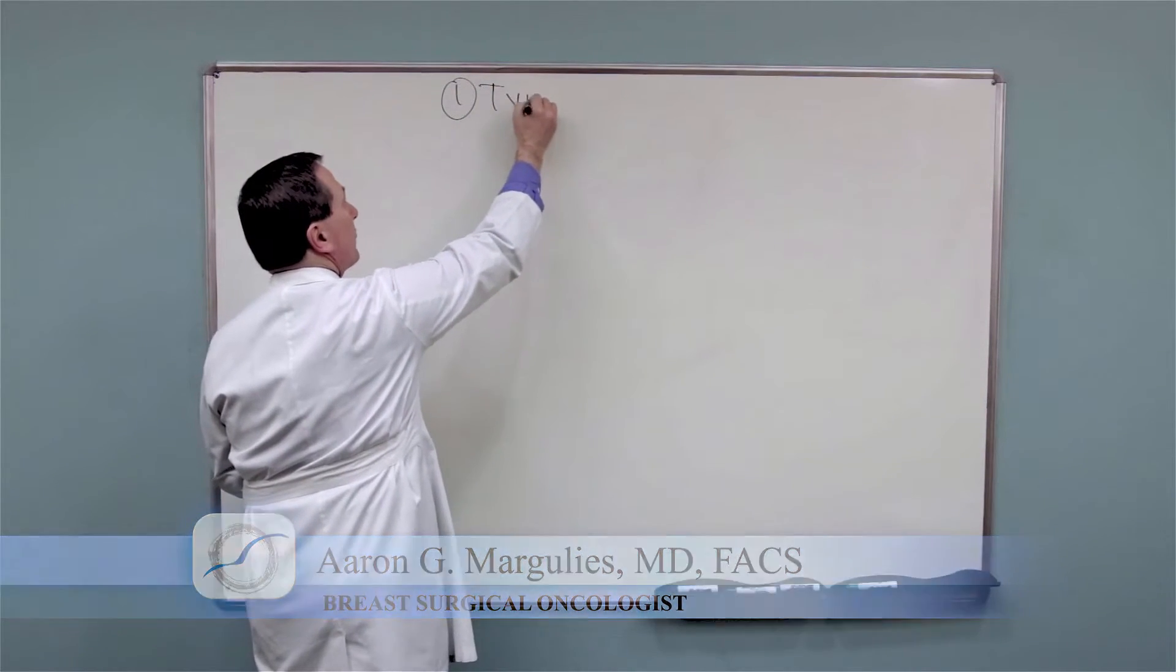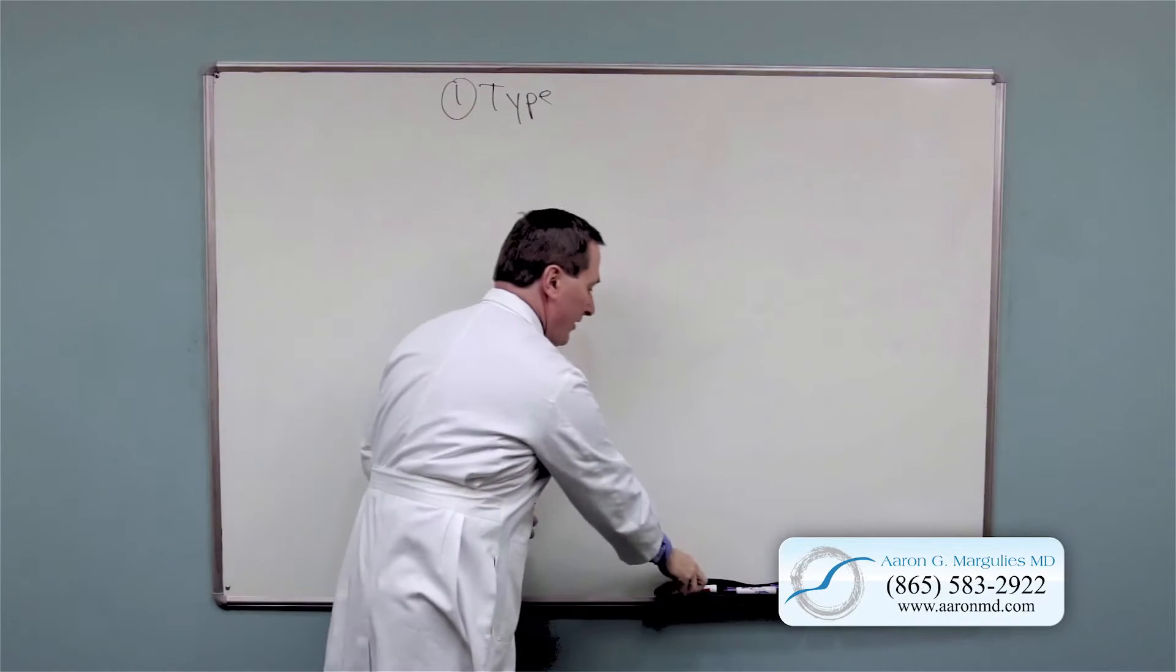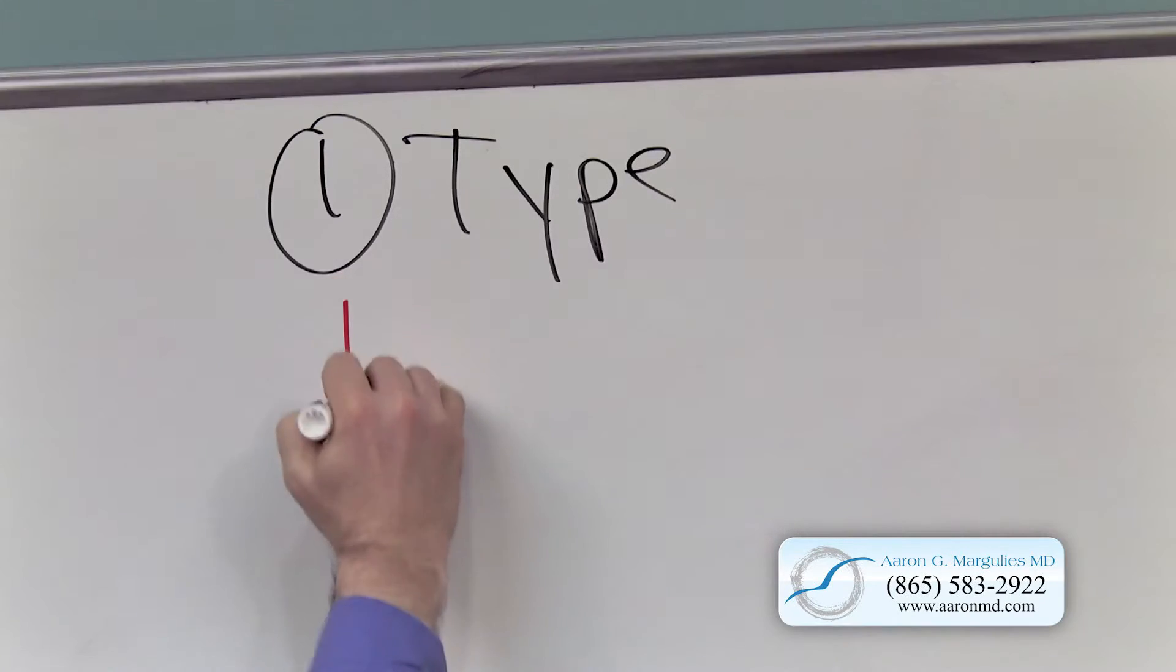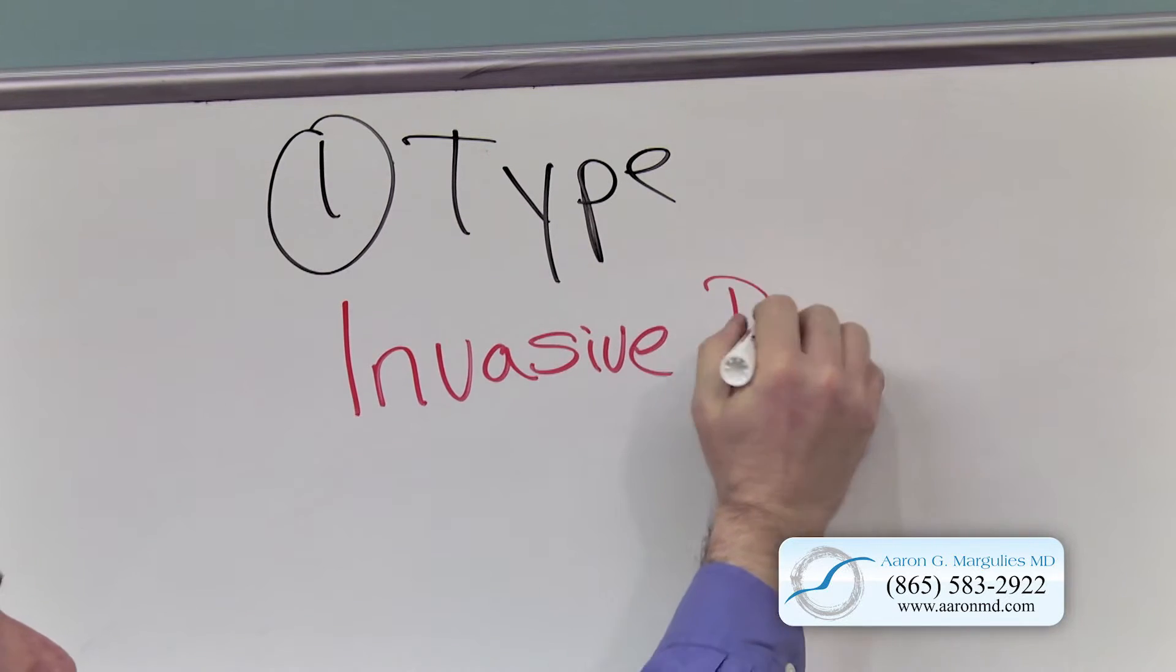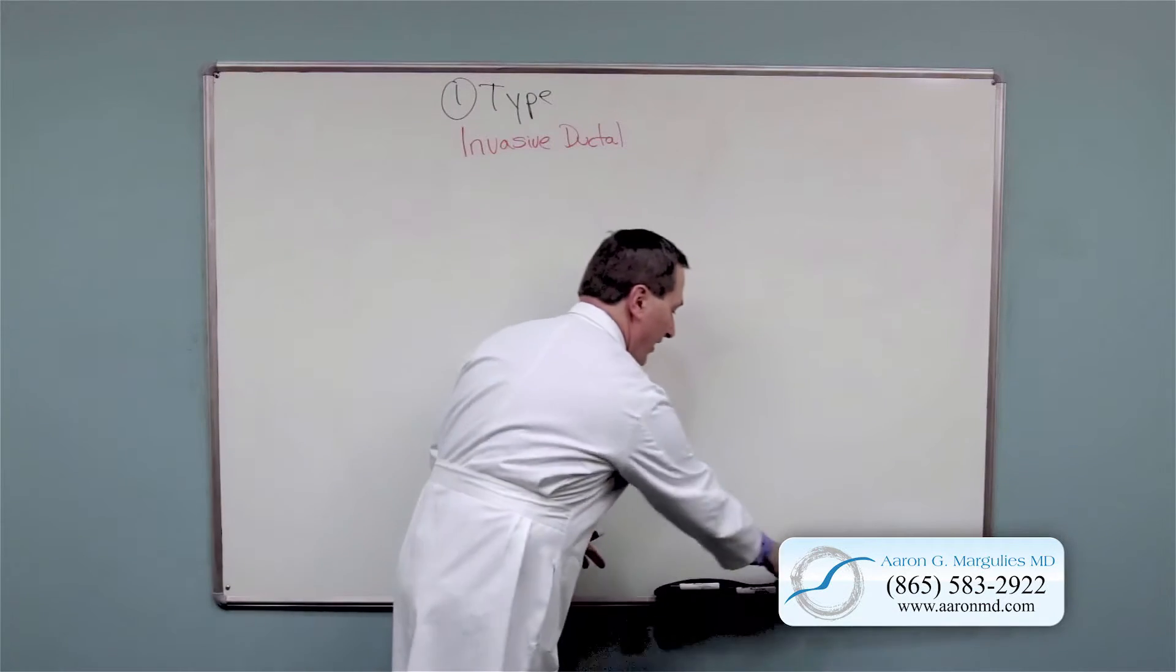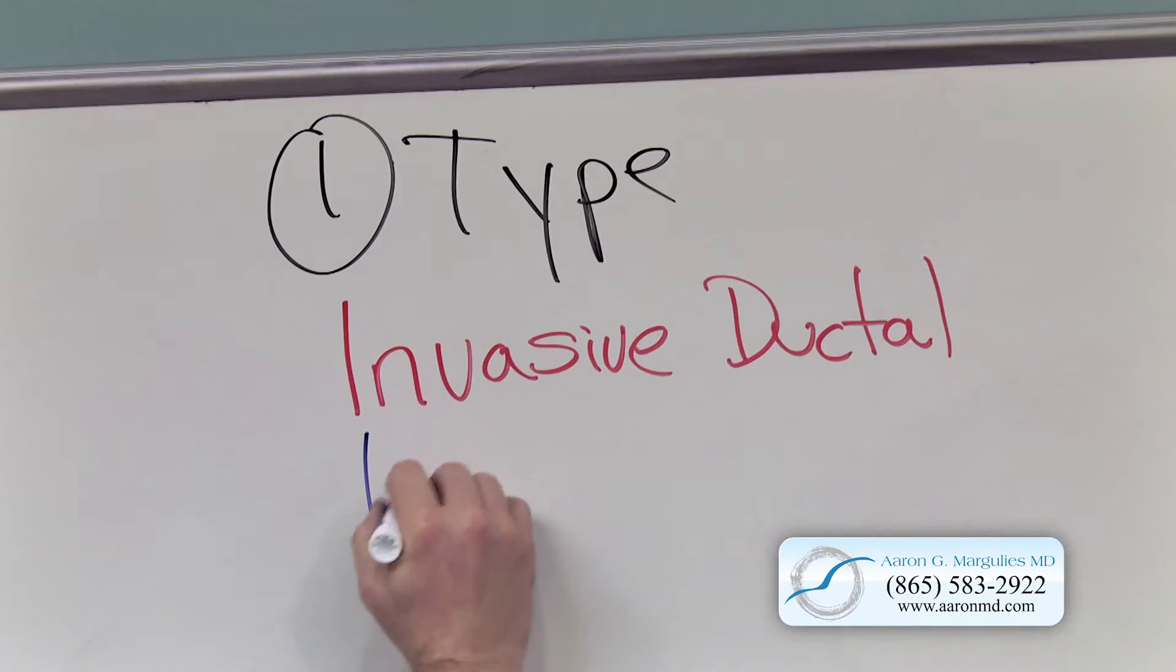First, we're going to describe the type of breast cancer that you have. And there are two main types. There's invasive ductal carcinoma and there is also invasive lobular carcinoma.